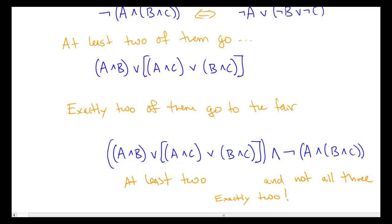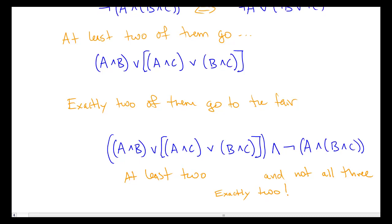Of course, if we're dealing with more than three elements and doing our quantity terms with conjunction, disjunction, and negation, things are going to get very unwieldy very quickly — which is why later in the book we'll develop an entirely different way of dealing with quantity terms. But for now it's worth seeing what we can do with just the truth-functional connectives: conjunction, disjunction, and negation. In our next video, we'll deal with some of the basics of translating with the arrow and the double arrow.